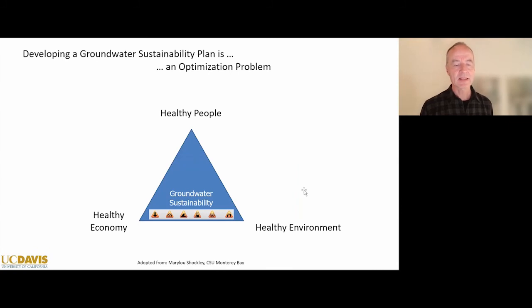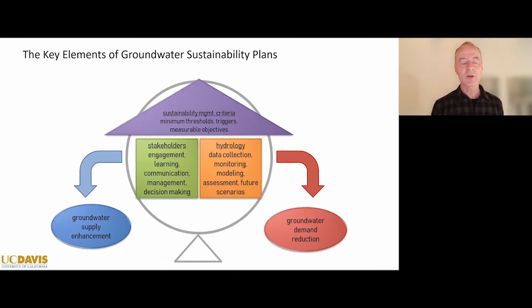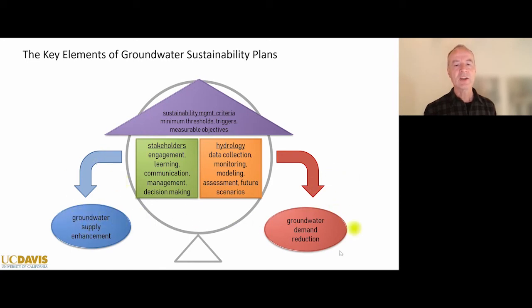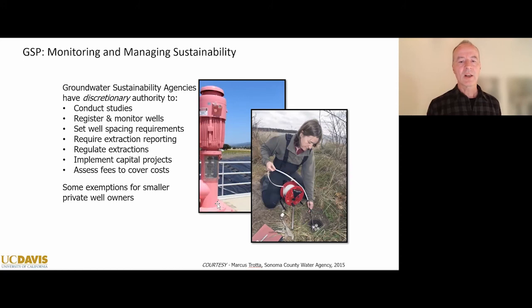These groundwater sustainability plans are a balancing act — balancing the demands of a healthy economy with healthy agriculture and urban economy, with the need for a healthy population and a healthy environment. That balancing act increases groundwater supply through additional recharge on one hand, and decreases demand where needed on the other. Decision making is informed by knowledge of the hydrology, knowledge of water budgets in the basin, and by extensive monitoring, data collection, interpretation, and the science to understand these systems.